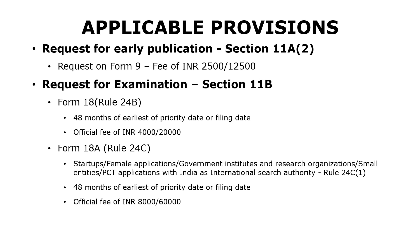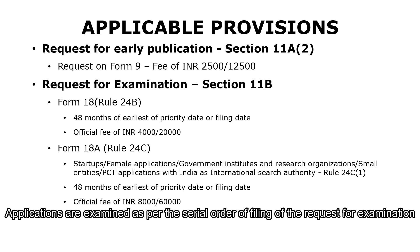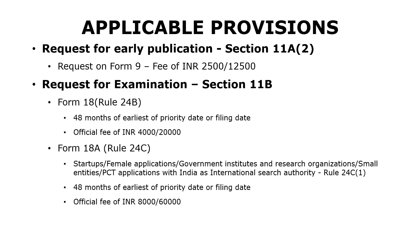To initiate a faster process towards getting a grant, you can also file a request for examination along with the patent application. The period provided for filing the request for examination is 48 months from the earliest of the priority date or the filing date. If you file the request for examination earlier, your application is placed higher up in the serial order and will be examined based on that serial order. The request for examination is under Section 11B, filed on Form 18 under Rule 24B. The official fee is INR 4,000 for a small entity, startup, or natural person, and INR 20,000 for a large entity.